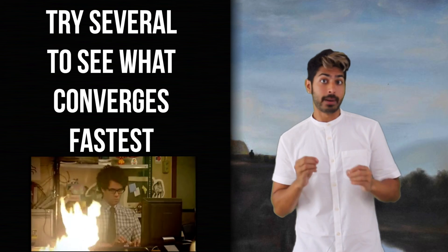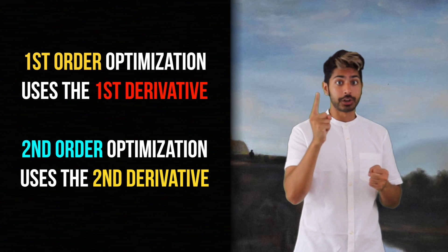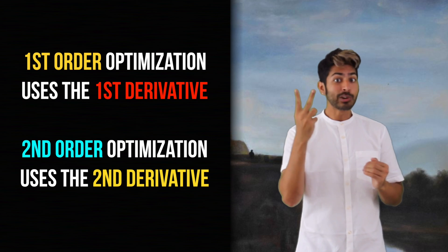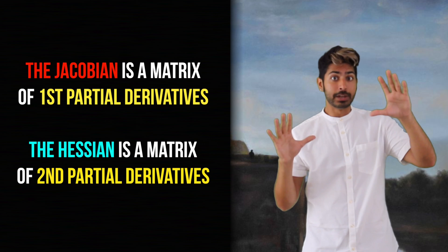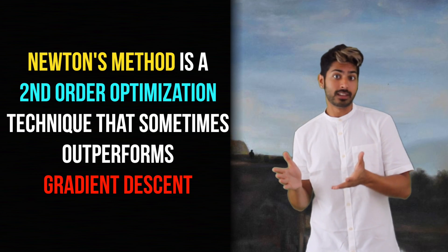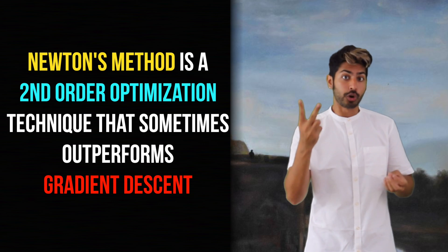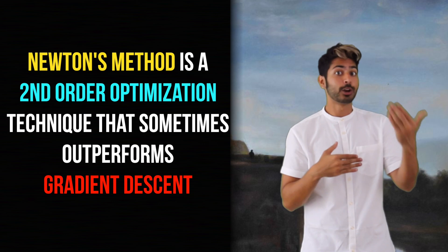Here are the key points to remember from this video. First-order optimization techniques use the first derivative of a function to minimize it. Second-order optimization techniques use the second derivative. The Jacobian is a matrix of first partial derivatives. And the Hessian is a matrix of second partial derivatives. And Newton's method is a popular second-order optimization technique that can sometimes outperform gradient descent.